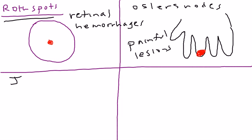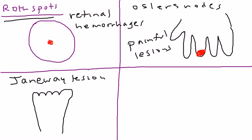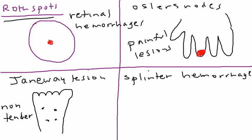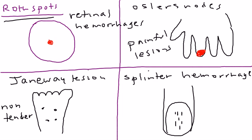The other one is called a Janeway lesion. The Janeway lesion is similar in the sense that it's also a skin lesion that can be found, for example, on your feet. But the difference is that they're non-tender, and they represent an area of necrosis — they can appear black because they're essentially representing dead dermis of the skin. And finally, the last one is called splinter hemorrhage, referring to the nails. Splinter hemorrhages are tiny blood clots that run vertically under the nails. When you see these things, it's very characteristic.